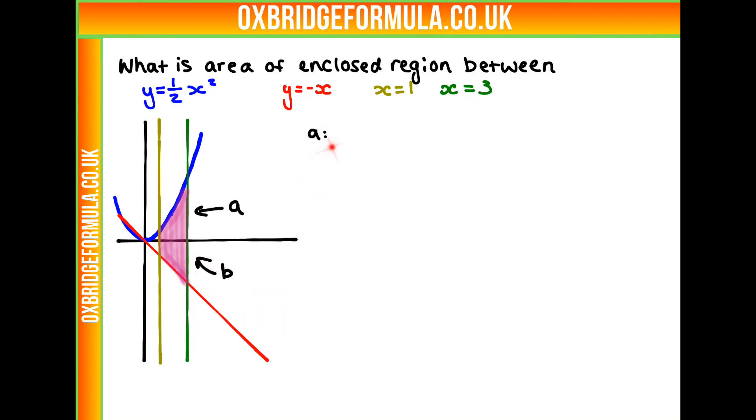Starting off with A, how are we going to find this area? We're going to need to find the area under the curve between x is 1 and x is 3. How do we find the area under our curve? We're going to need to integrate our expression for our curve, which is y equals half x squared.